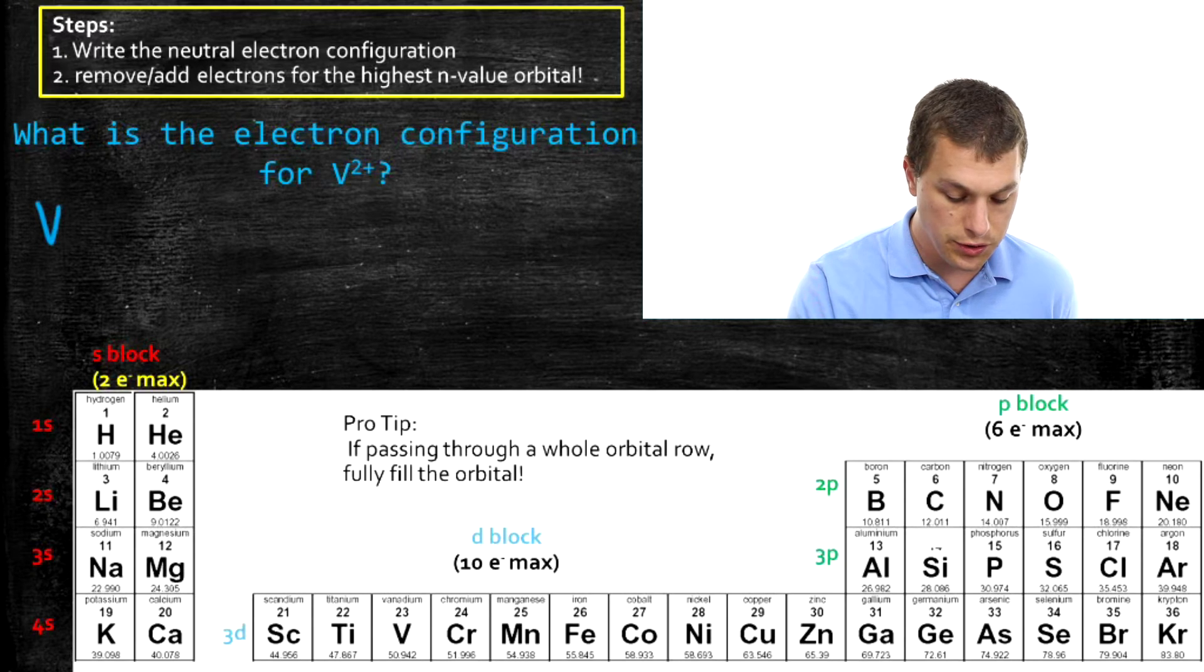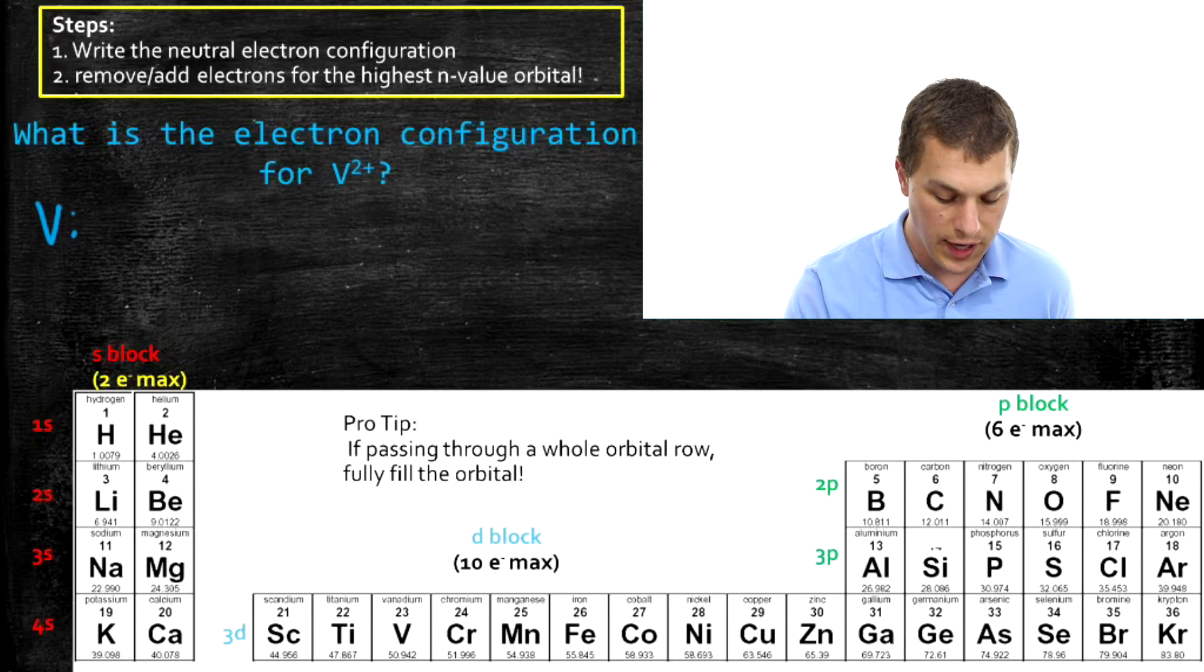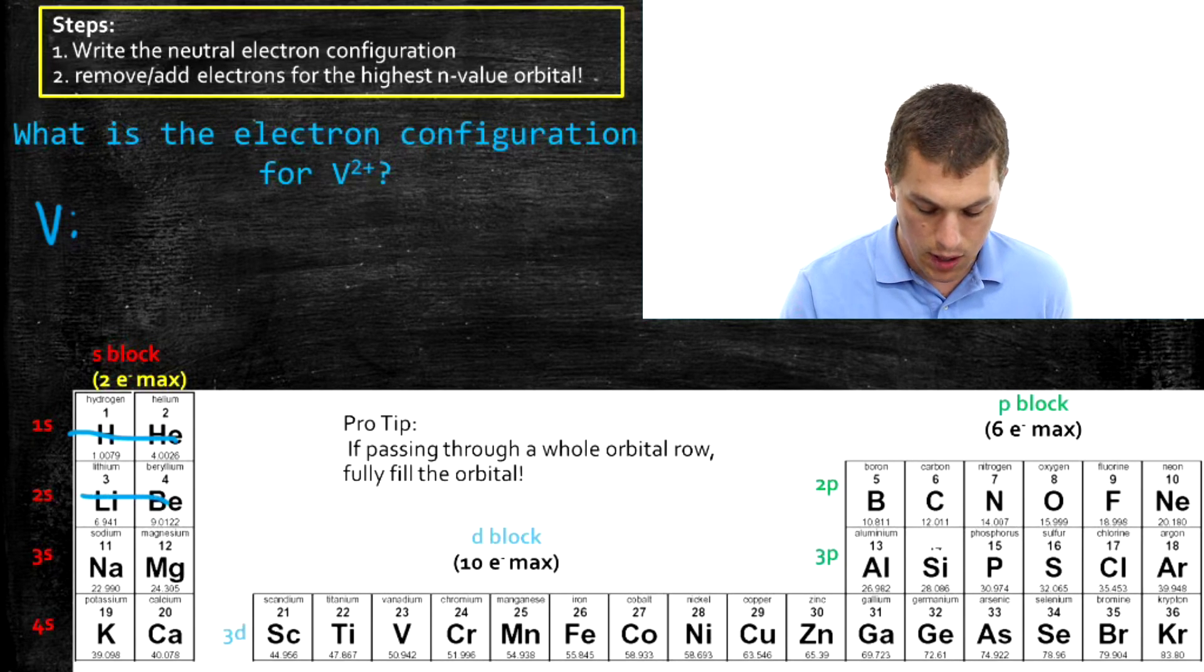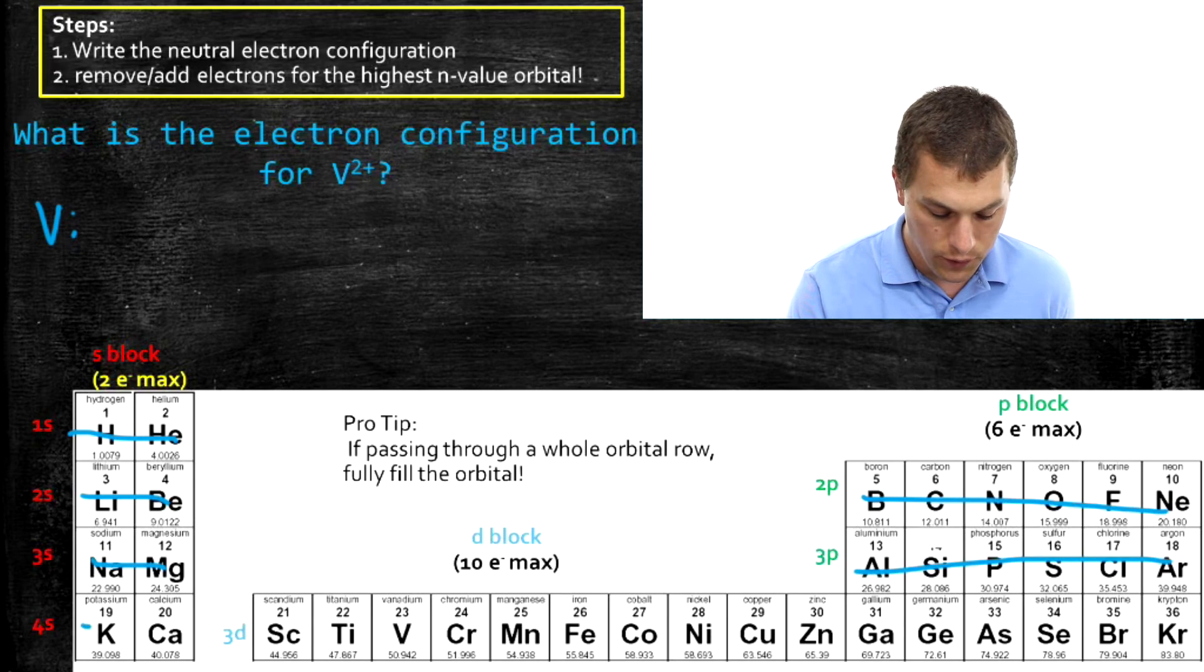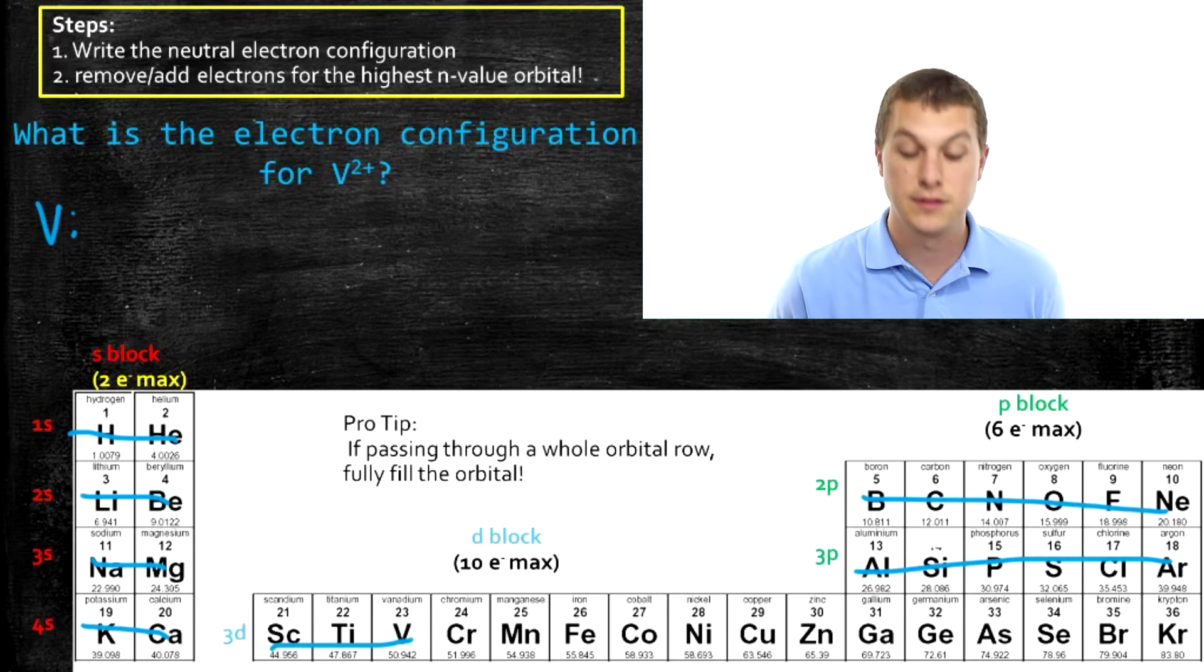So first, let's start out just as we usually do, by writing the electron configuration for a neutral Vanadium. And we're going to go through 1S, 2S, all of 2P, 3S, all of 3P, 4S, and then three electrons into the 3D.